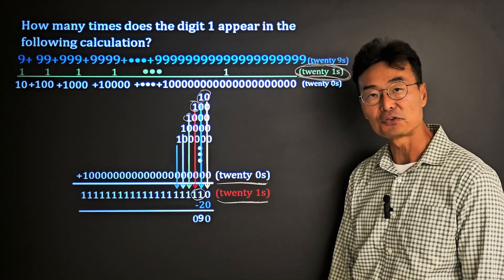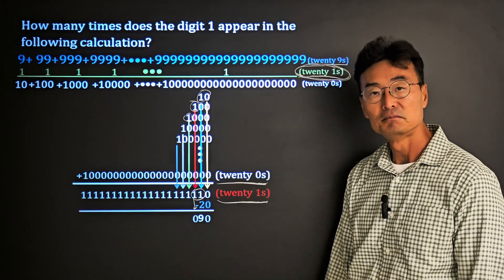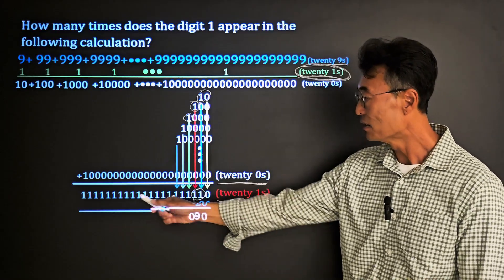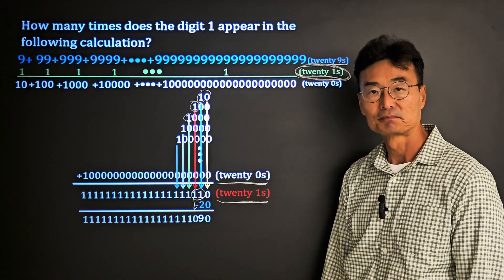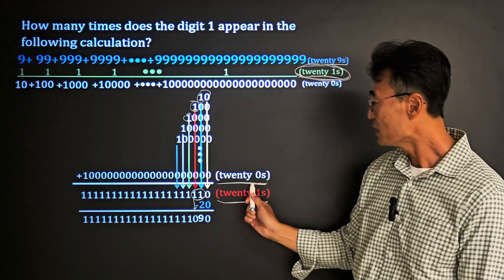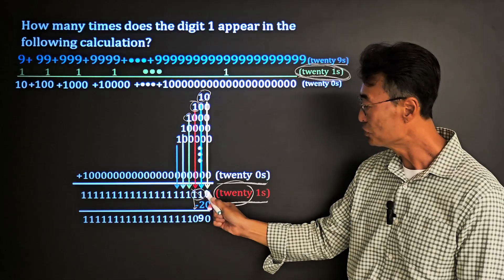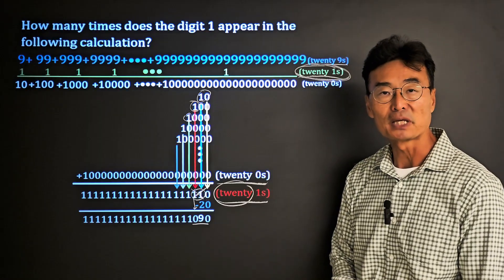Right there. And there's nothing else underneath so the ones on the left will come straight down like so. So since we have 20 ones here but two of the ones have been eliminated from the final sum that we have...